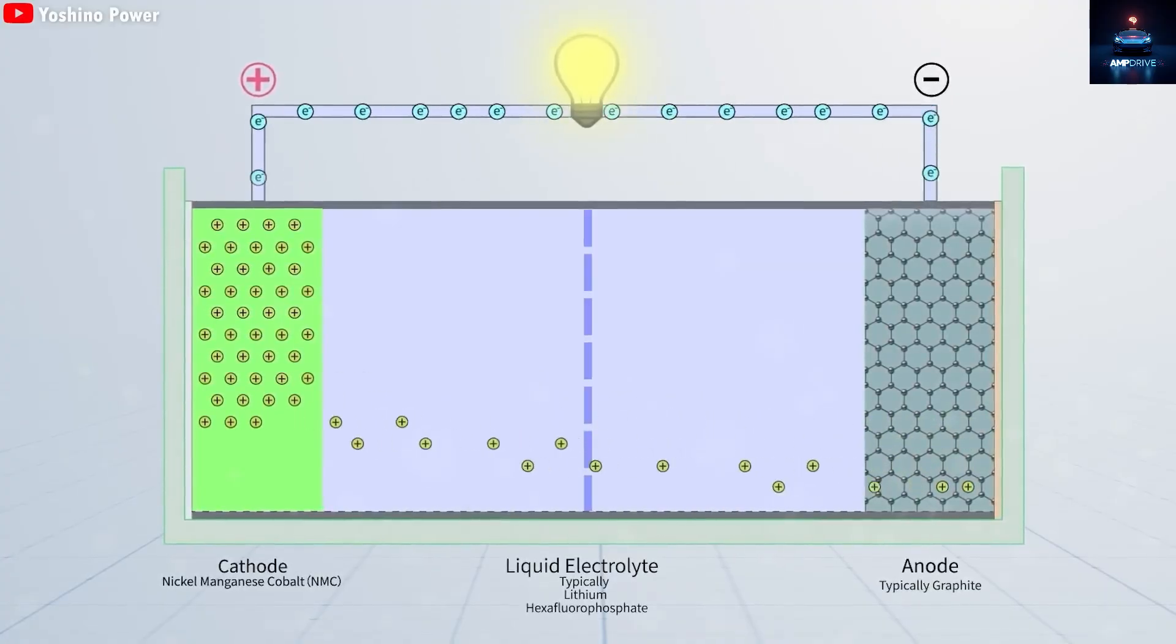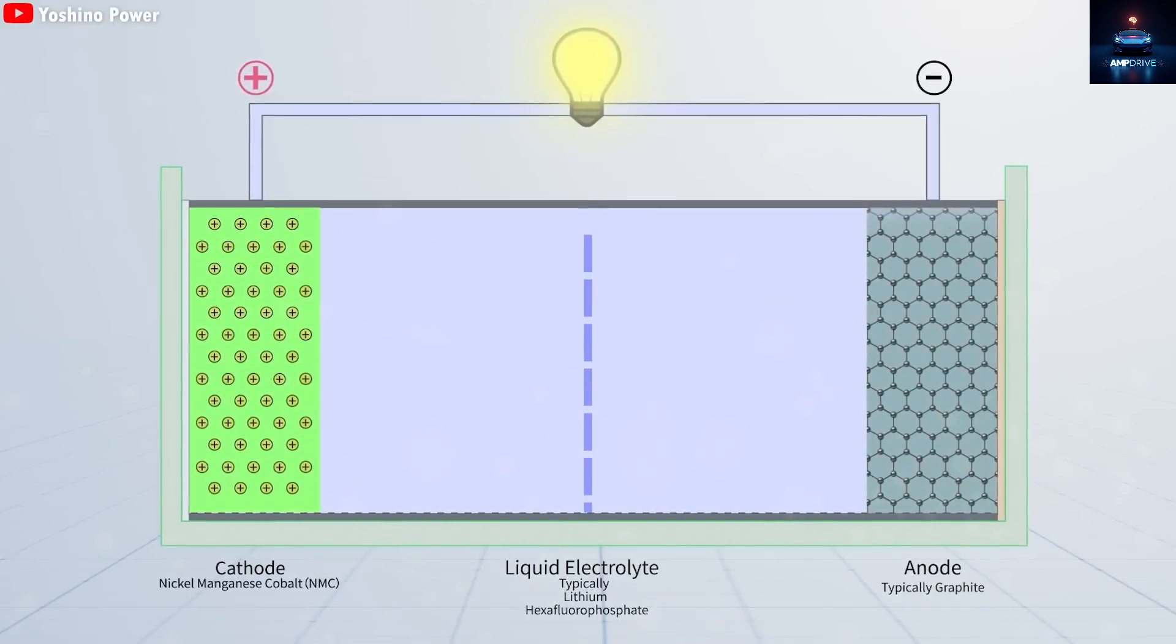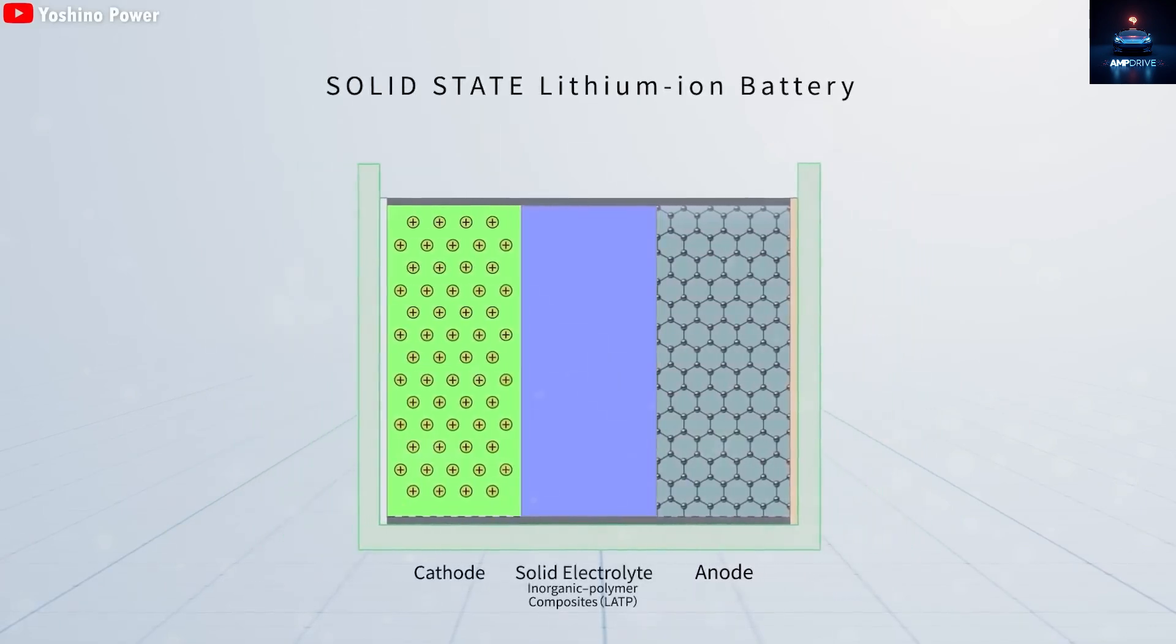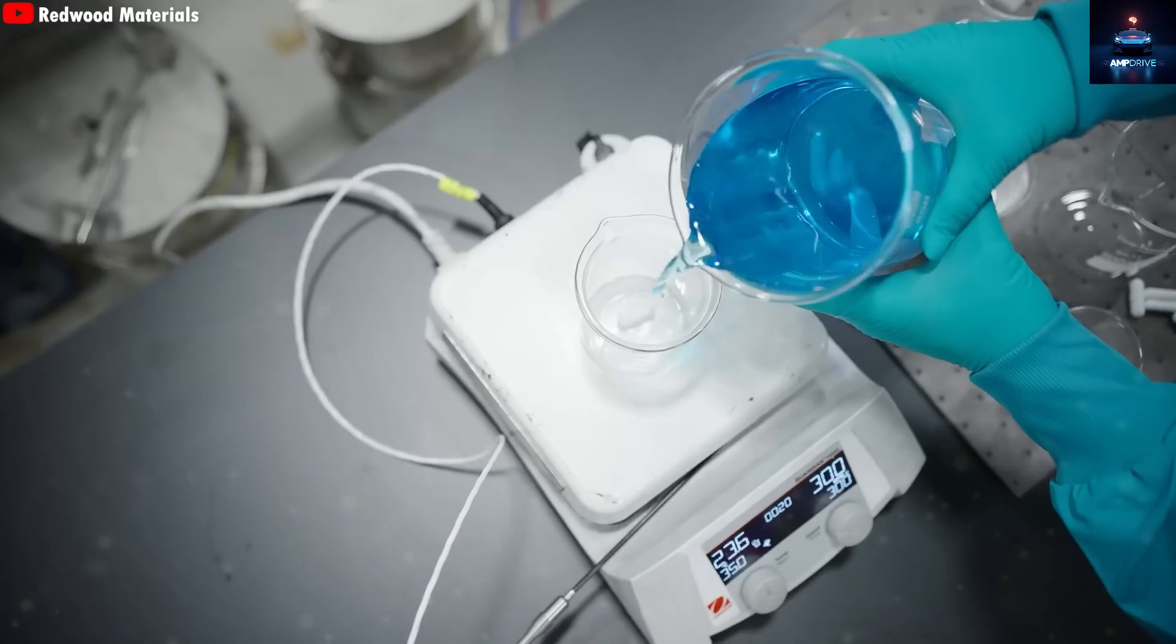The electrolyte is the key difference between lithium-ion and solid-state batteries. While lithium-ion batteries, including Tesla's 4680, use a liquid electrolyte, solid-state batteries use a solid one. That small change completely changes how the battery functions.